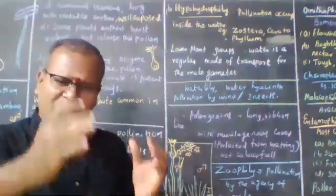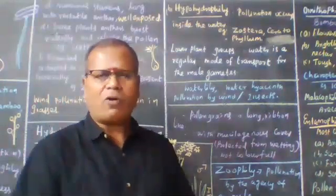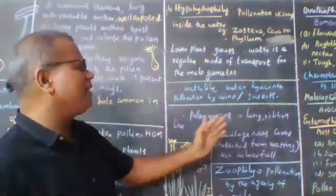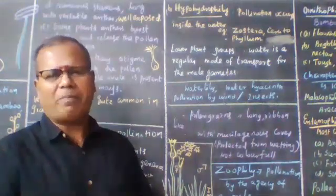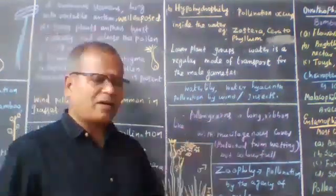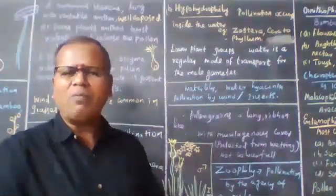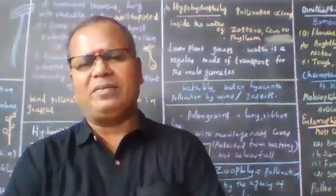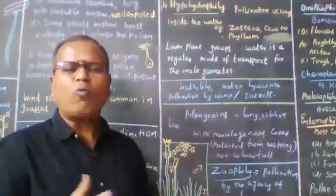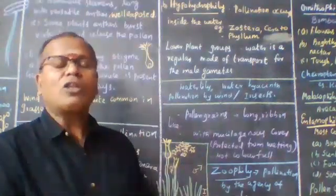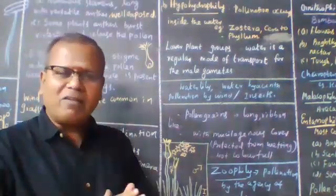In hydrophilic plants, there is a speciality. The pollen grains are long and ribbon-like. When pollination takes place, the pollen is protected from wetting by a mucilage coating. The flowers of hydrophilic plants are generally not colorful, as they do not need to attract pollinators.